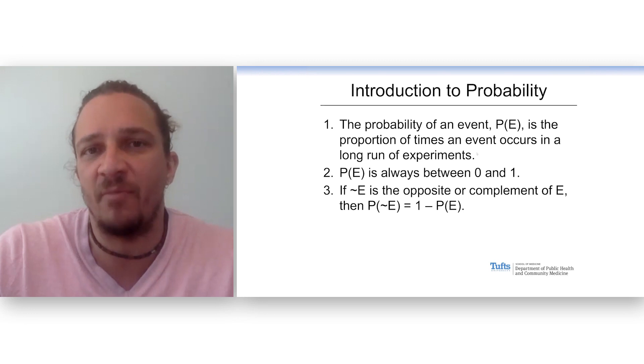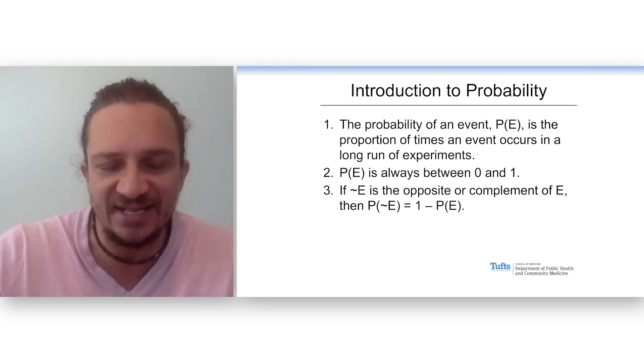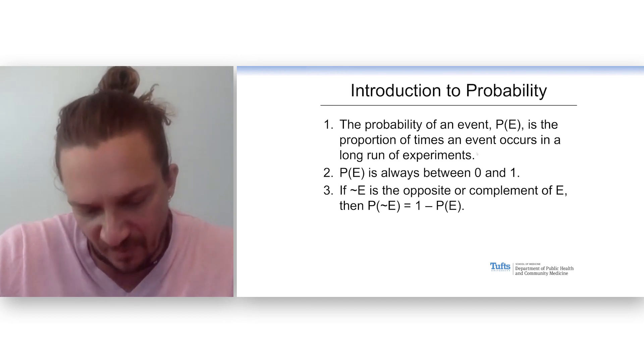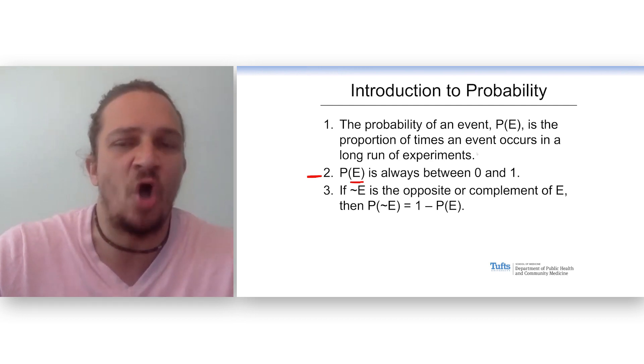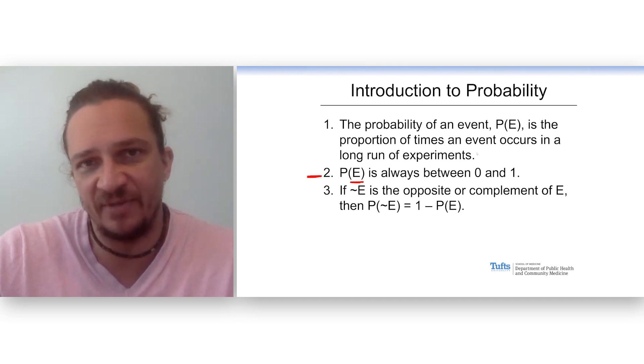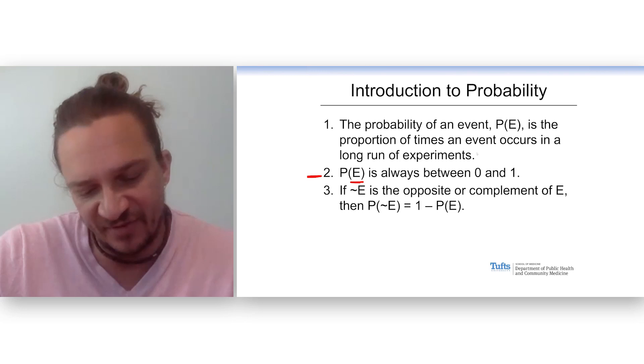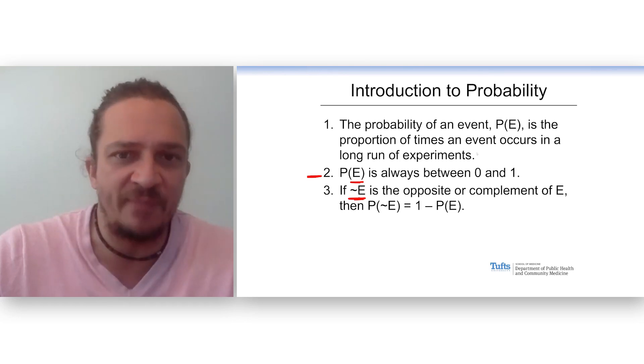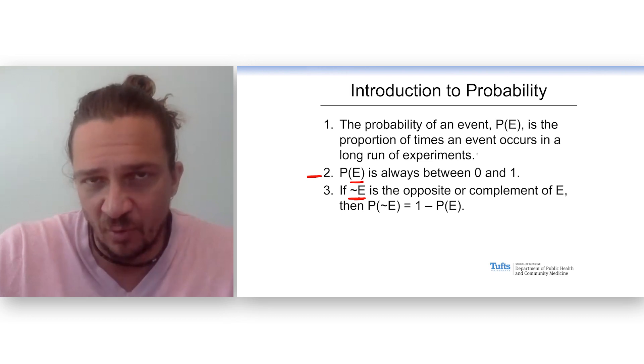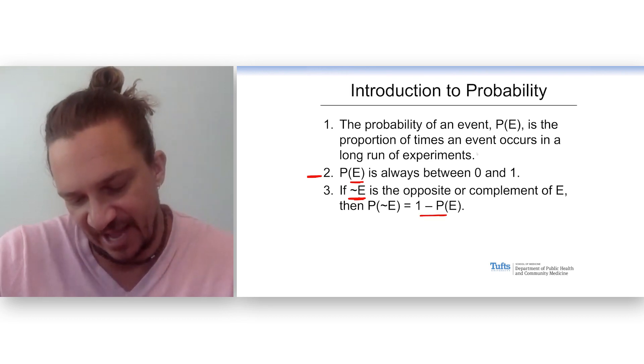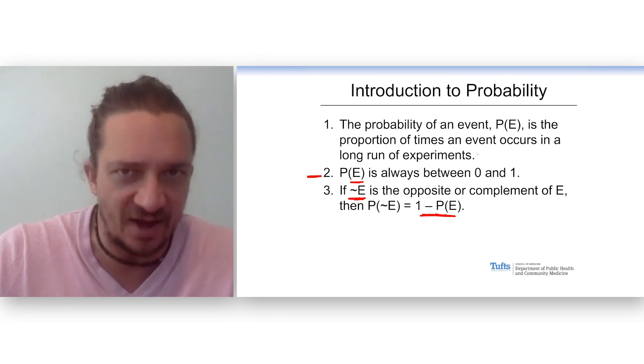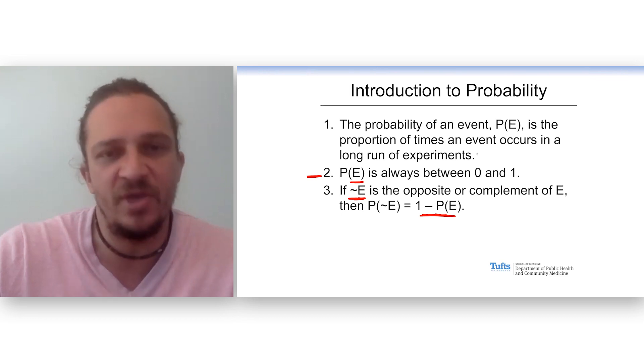That's how we're going to think about probability. The probability of flipping a heads on a fair coin is 50%. So the probability of an event, P(E), is always between zero and one. If it never happens, it's zero. If it always happens, it's one. Most things are somewhere in the middle. And we'll have to think about if not that event or the opposite of that event, what's the probability of that? Well, that's one minus that event. So if heads is 50%, obviously tails is also 50%.